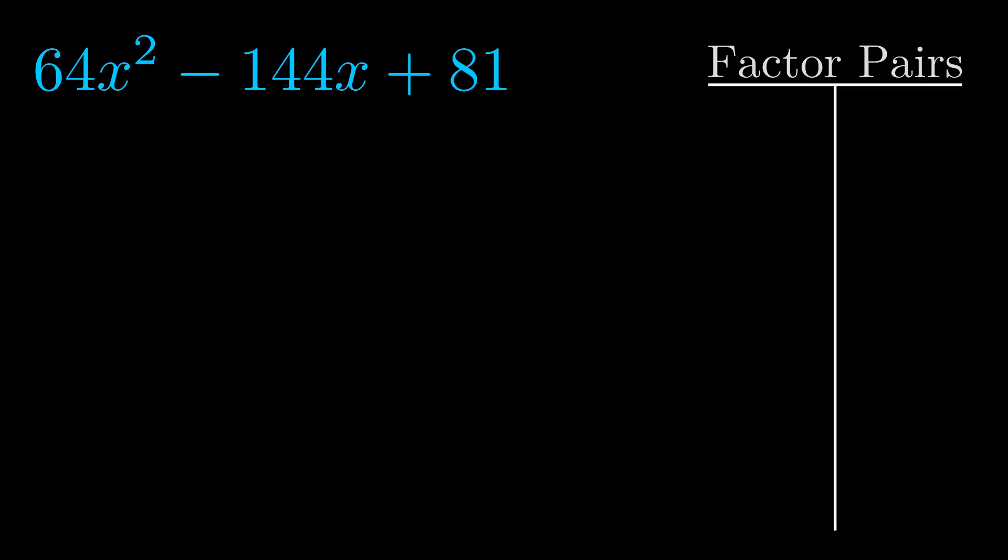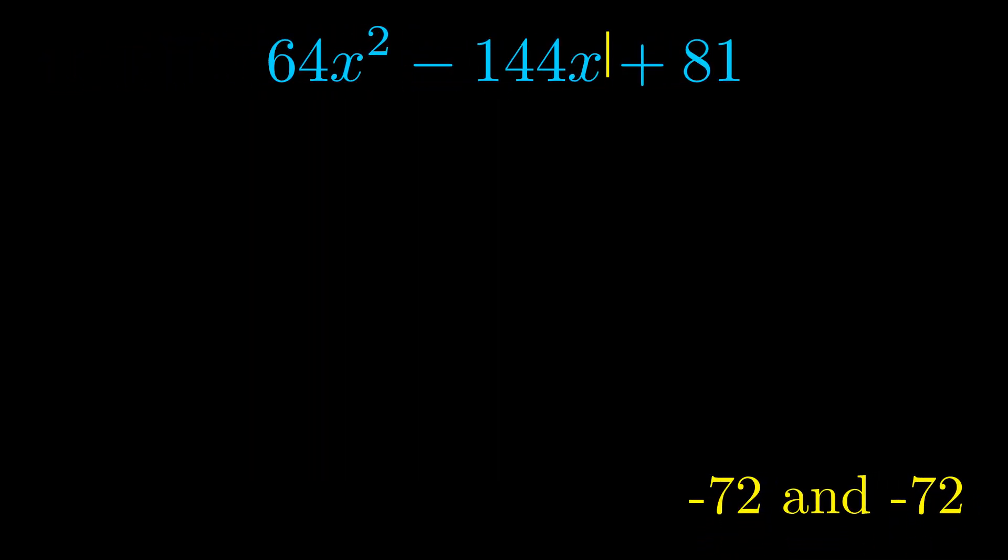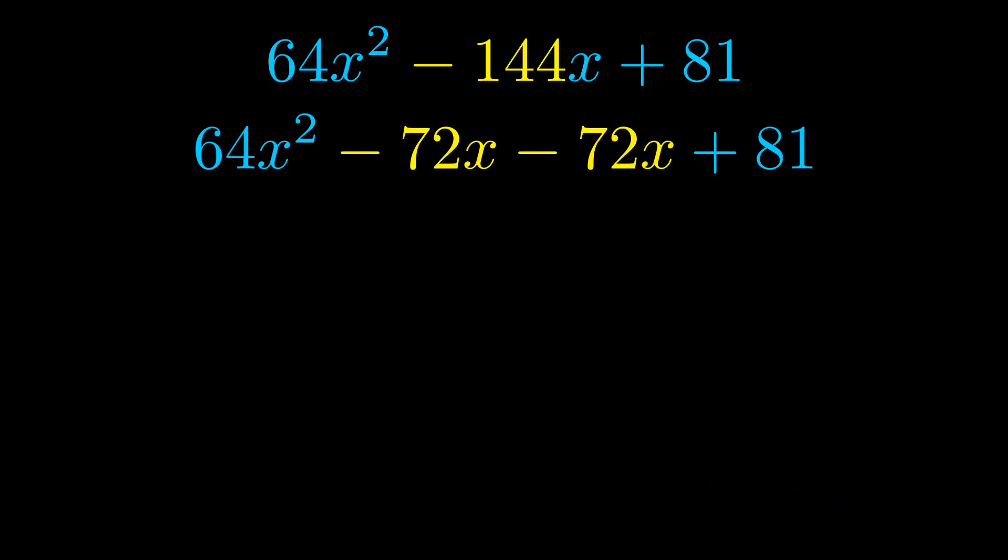Now once we have this factor pair what we want to do is use it to split up the b value. Notice how I'm going to keep my first term and my last term completely unchanged. It is only this b term highlighted in yellow that gets expanded into this correct factor pair.